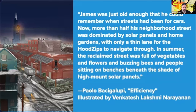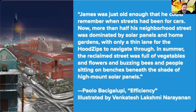The Cities of Light collection, published by Arizona State University's Center for Science and the Imagination in 2021, includes a short story by Paolo Bacigalupi called "Efficiency," in which he describes how the south side of Chicago has been remade: "James was just old enough that he could remember when streets had been for cars. Now more than half his neighborhood street was dominated by solar panels and home gardens, with only a thin lane for the hood zips to navigate through. In summer the reclaimed street was full of vegetables and flowers and buzzing bees and people sitting on benches beneath the shade of high-mount solar panels."